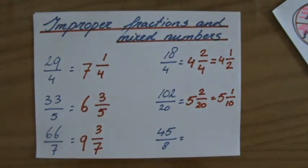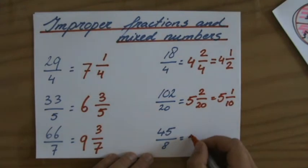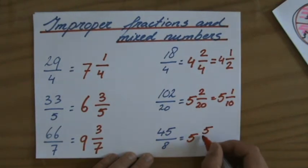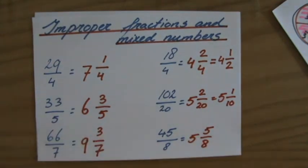45 over 8. That will fit in 5 times because 8 times 5 is 40. My remainder will be 5 over 8. No common factor there.